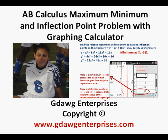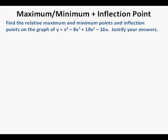AB Calculus maximum, minimum, and inflection point problem with the graphing calculator. In this lesson we're going to work out an AB Calculus test problem that allows the use of a graphing calculator. The problem is: find the relative maximum and minimum points and inflection points on the graph of y equals x to the fourth power minus 8x cubed plus 18x squared minus 16x. Justify your answers.